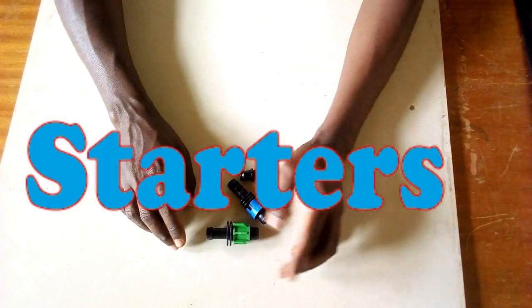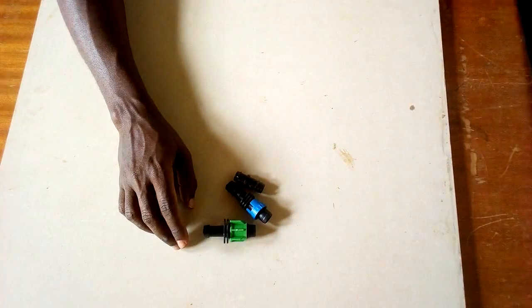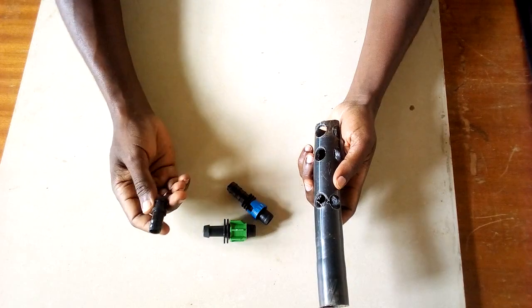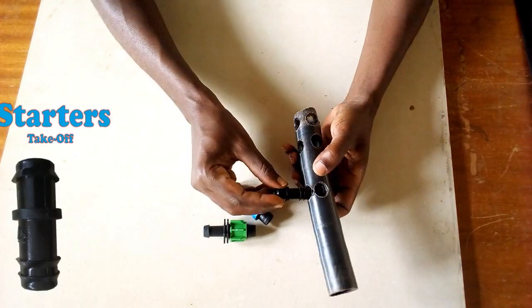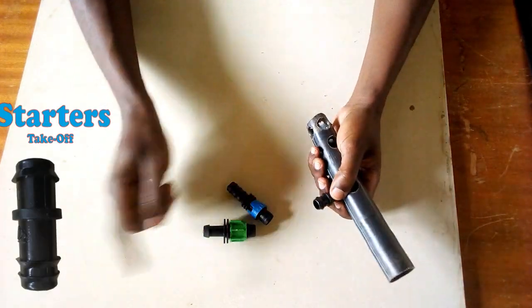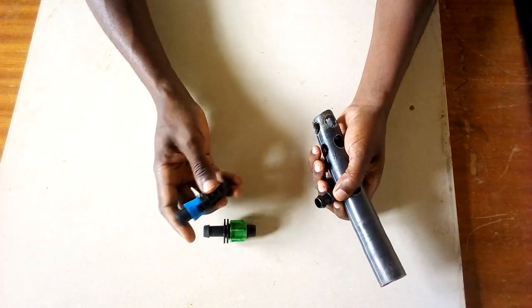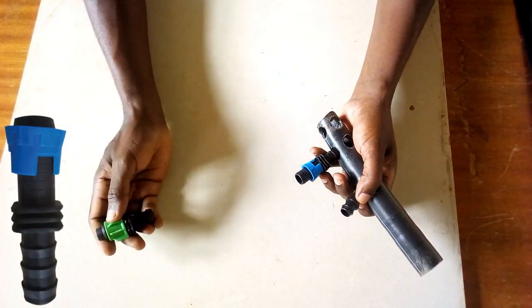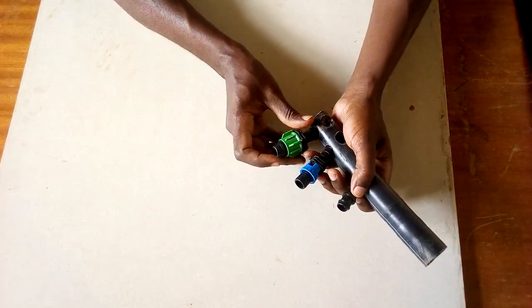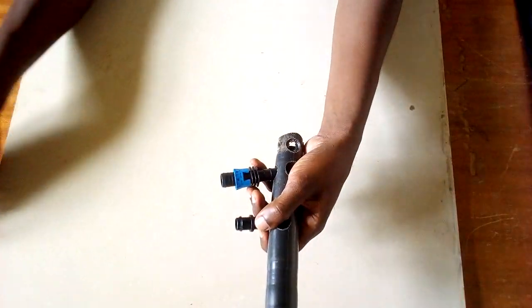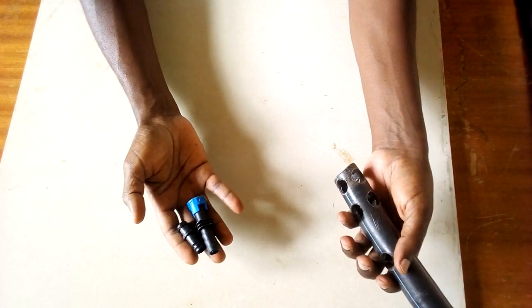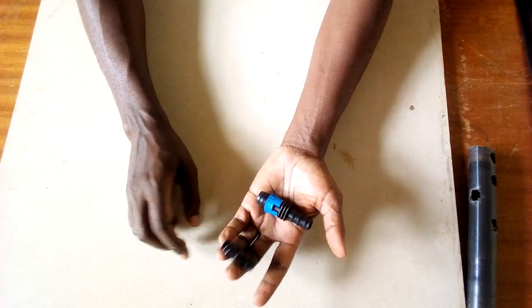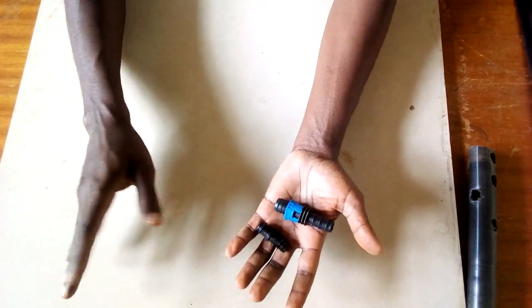There are various ways of starting your dripper line from the main line. These starters provide you with the option of tapping the water from the main line. Farmers can use either of this and more to achieve their purpose. And these are not as expensive. They can cost about 25 Kenya shillings apiece.